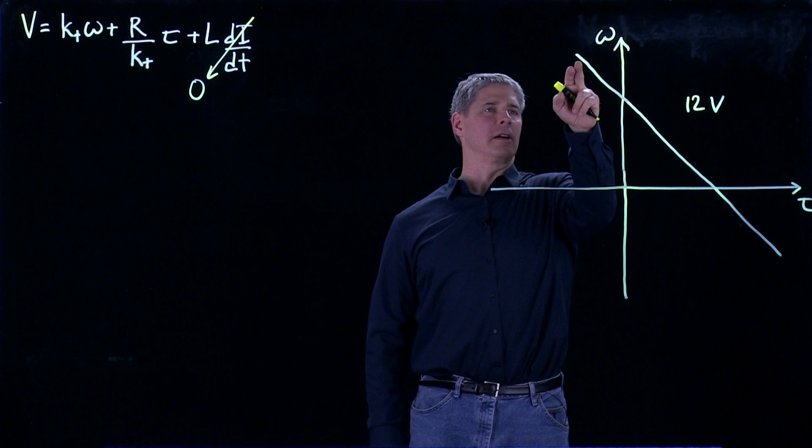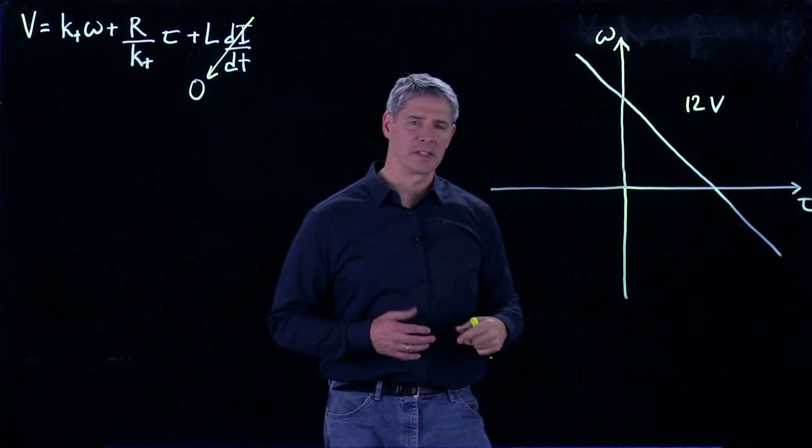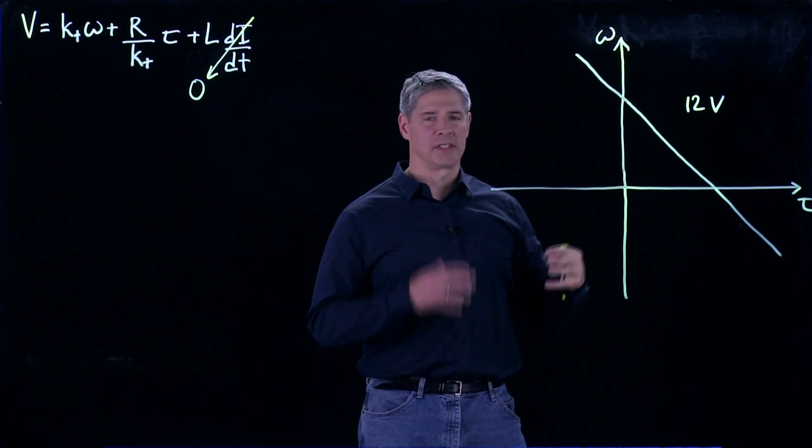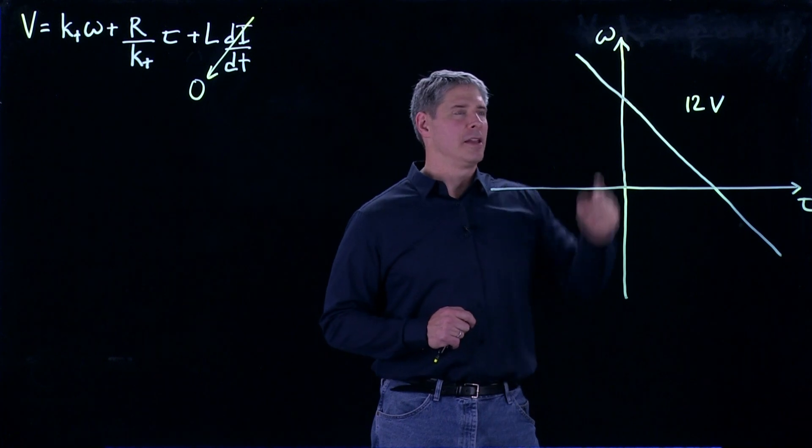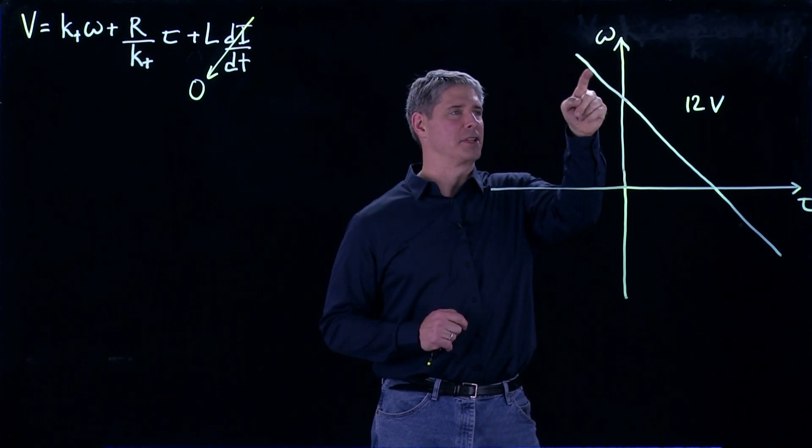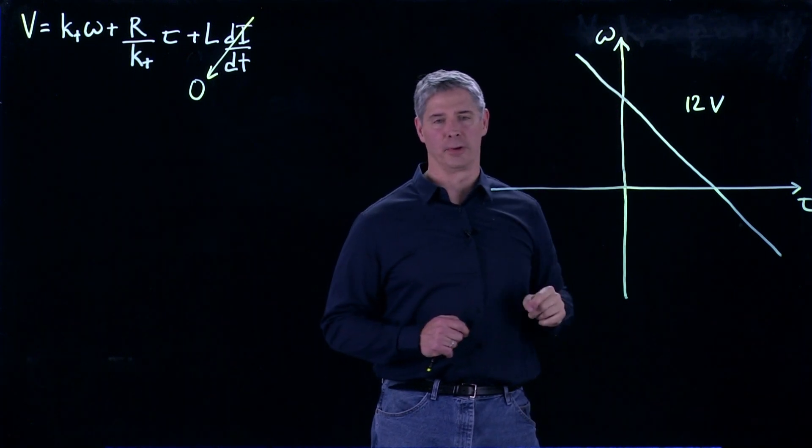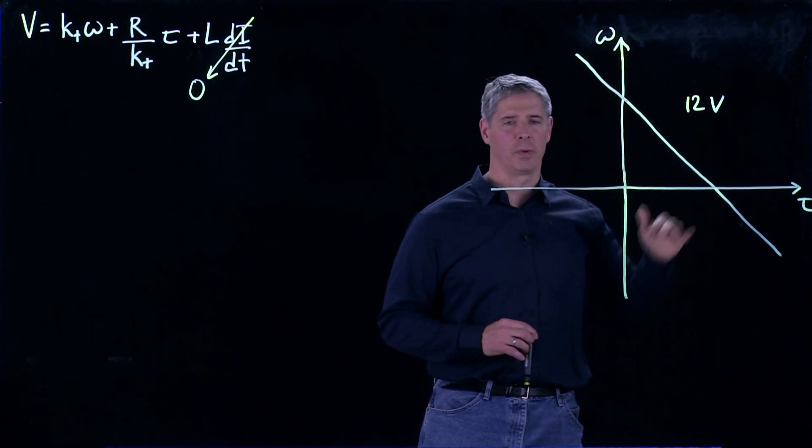And similarly up here, if we're operating at this operating point, then maybe something externally is forcing the motor to spin at a high speed. But once it stops being forced externally and we're just applying 12 volts to it, the torque actually has to be negative. And what's going to happen is the motor is going to start to slow down and go to this no-load operating point. So we can extend this speed-torque curve outside of the top right quadrant.